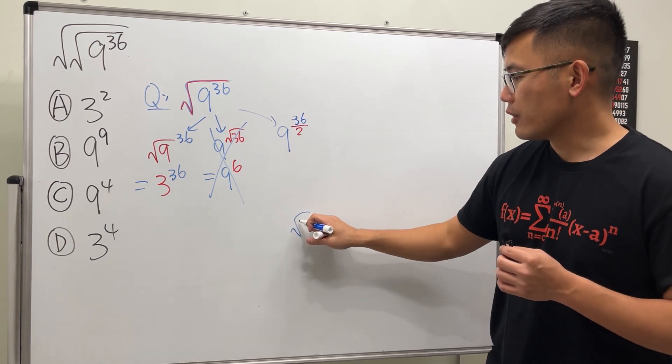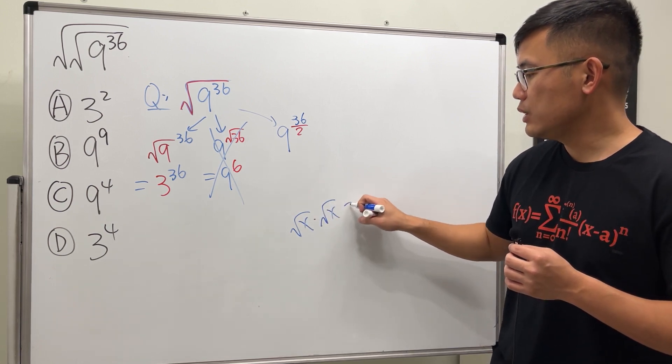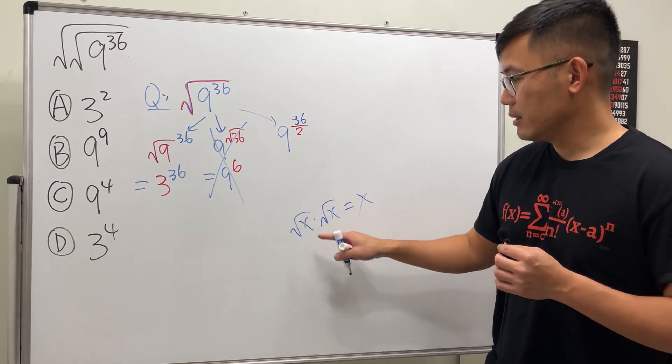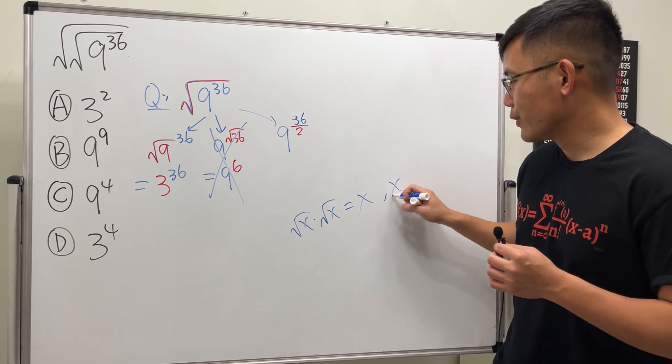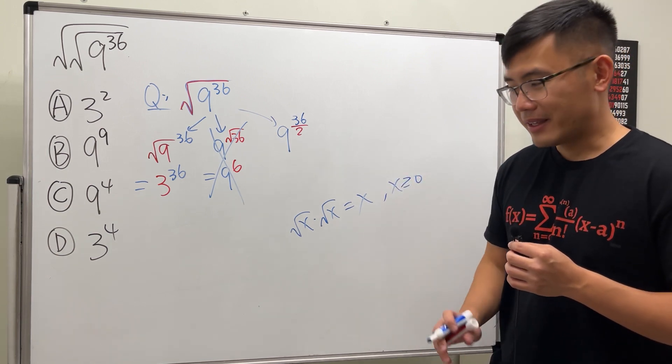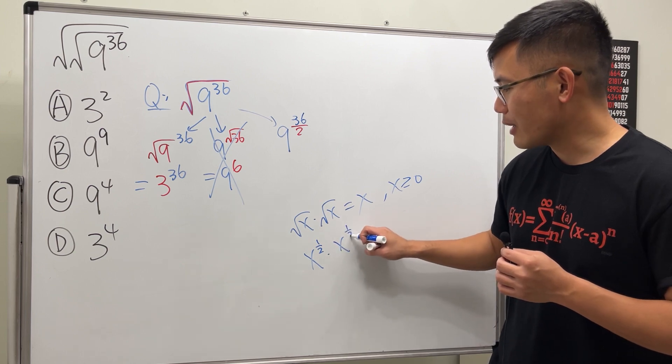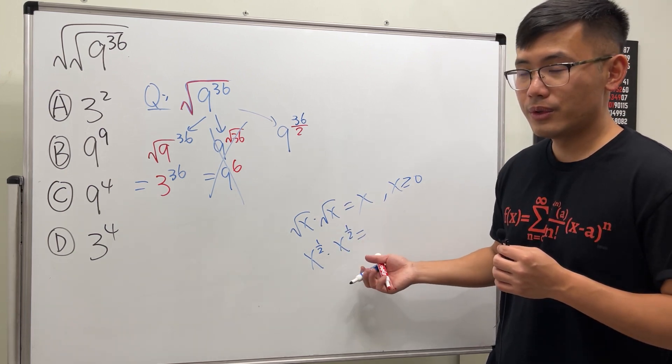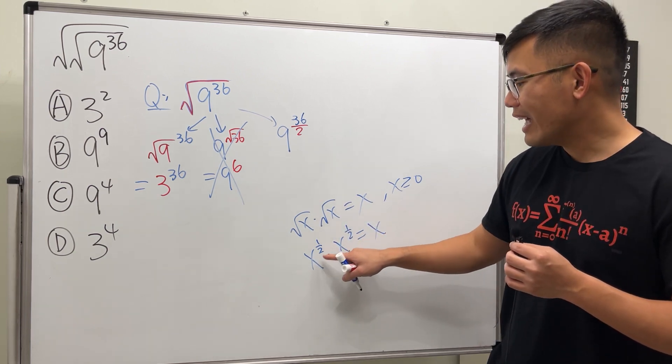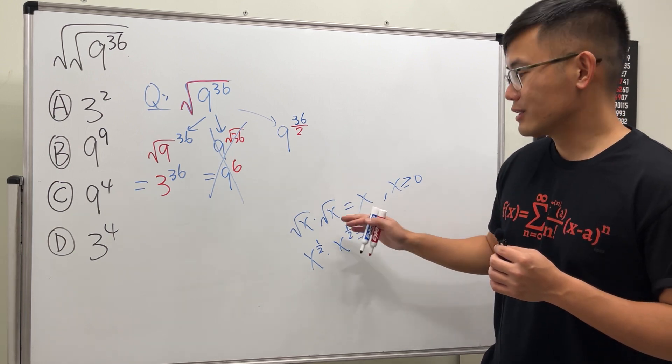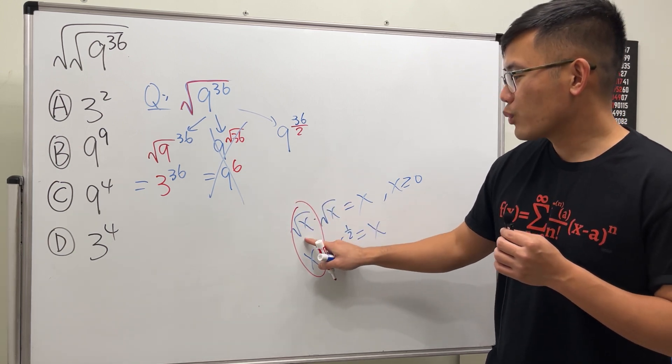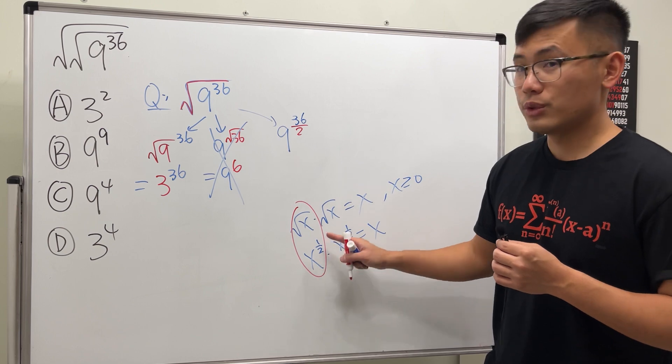Because the square root of x times the square root of x is equal to x (assuming x is greater than or equal to zero). And here you see, if we have x to the one-half power times x to the one-half power, this equals x to the one-half plus one-half, which is one. So the idea is that square root of x equals x to the one-half power.